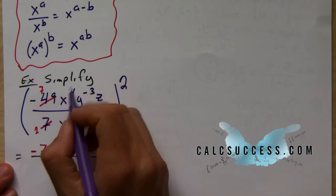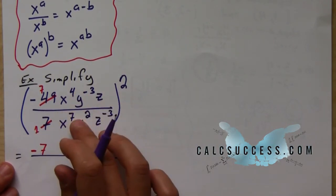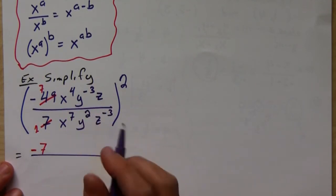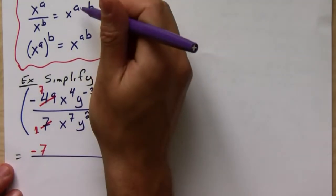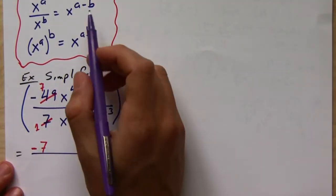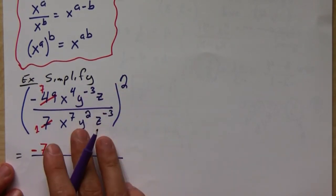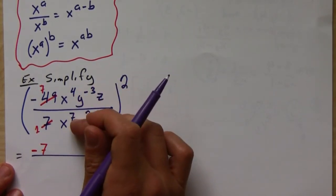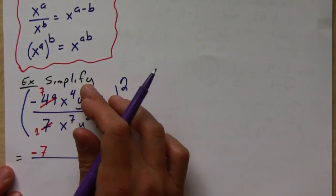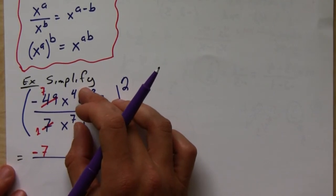And then we have x to the fourth and x to the seventh. Now I'm going to show you guys a quick little trick for simplifying these that makes it easier. The rule says to subtract, but remember that when you have a negative exponent you have to move it to make it positive. So the easier thing to do is to just subtract big minus small, and then you put it positive wherever the bigger one is.